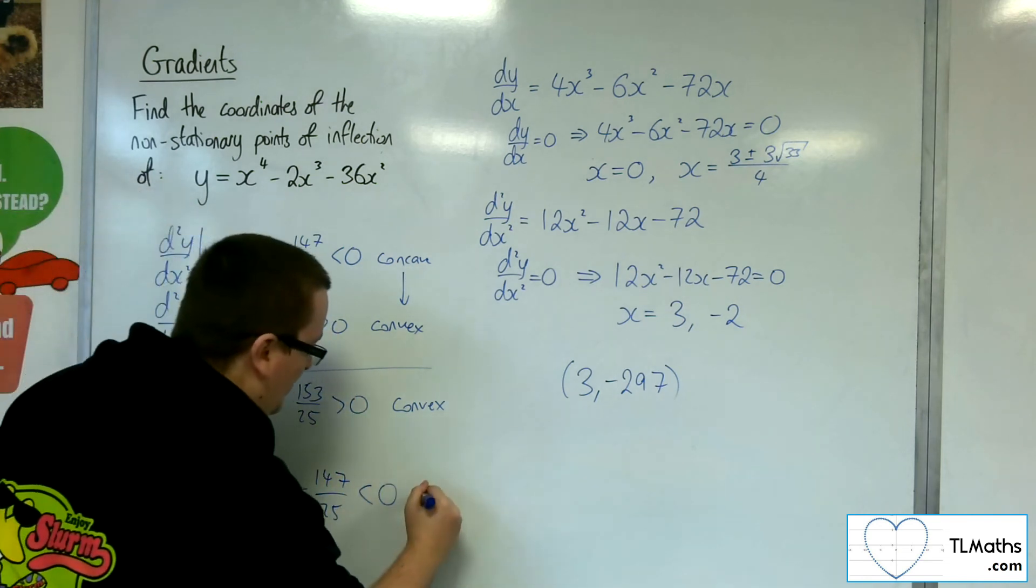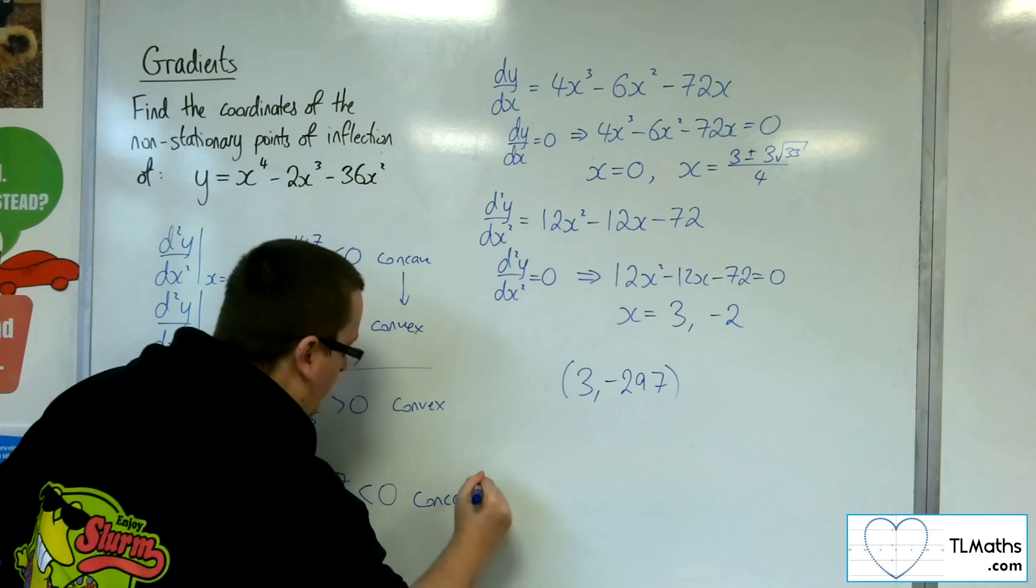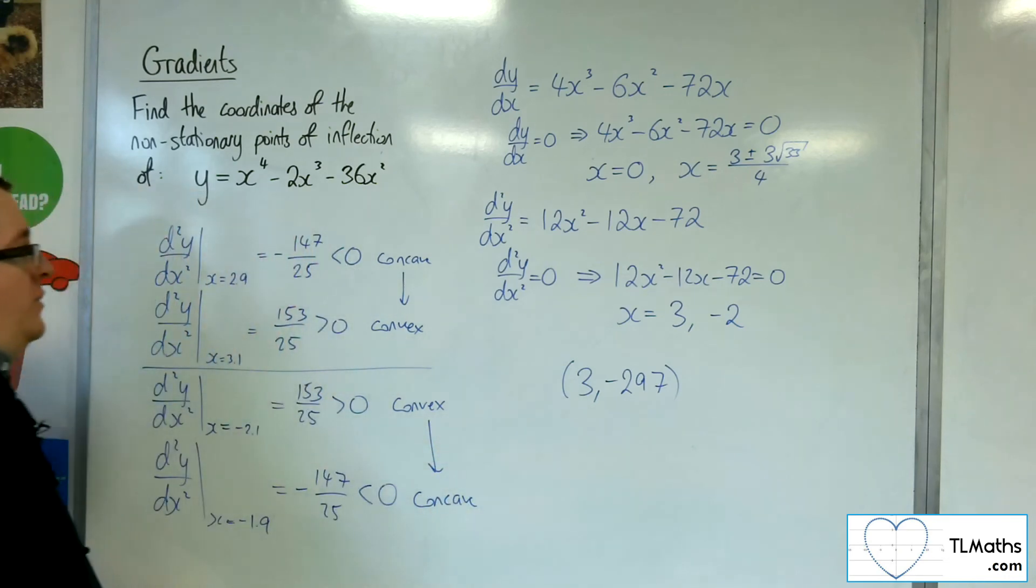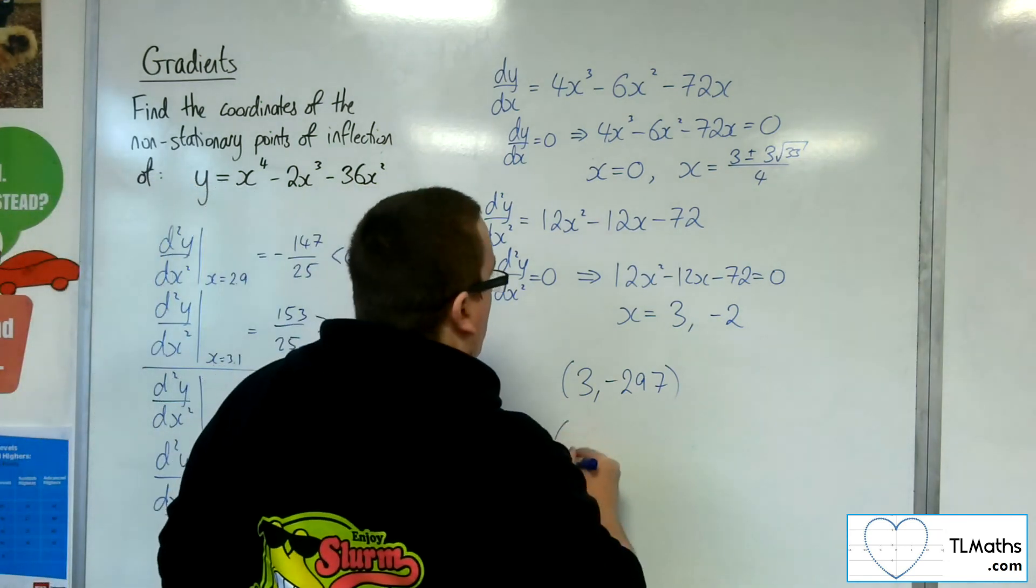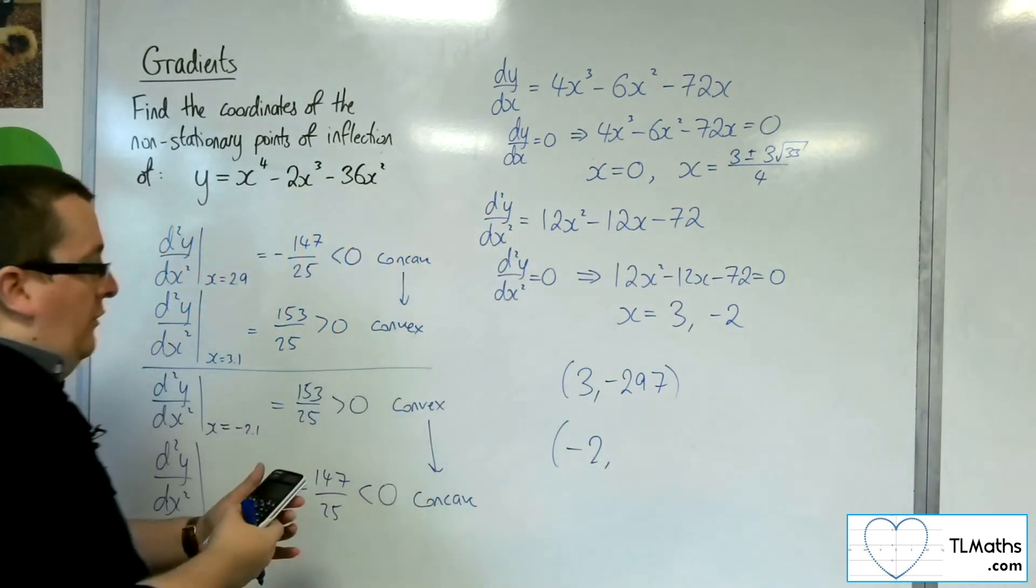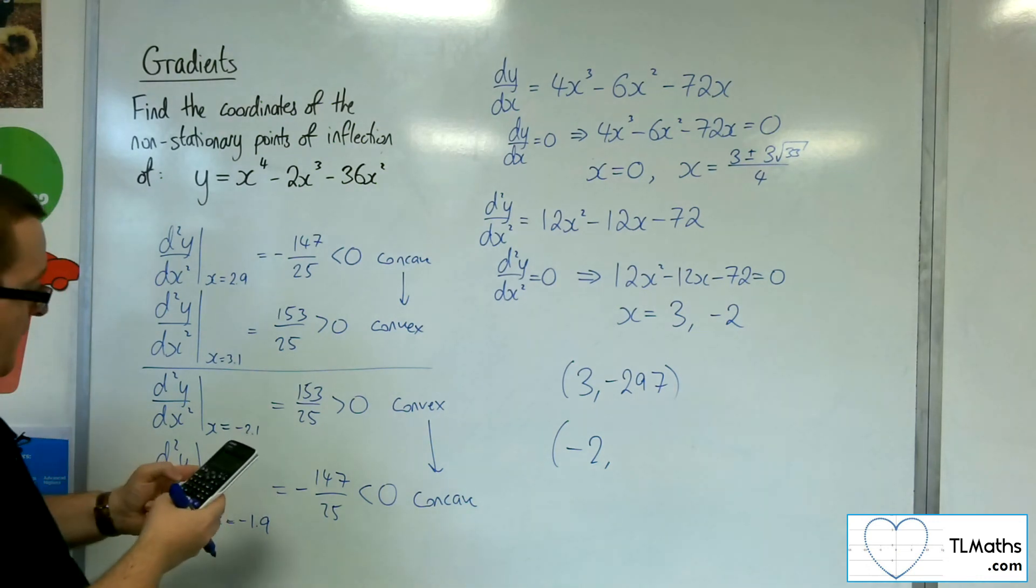Right, so negative, and so that's concave. And so we're going from convex to concave, and so we've got that change of sign in the second derivative. And so minus 2, x is minus 2, it's definitely a non-stationary point of inflection. So we've got to find its y-coordinate,